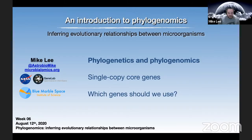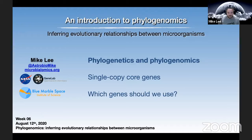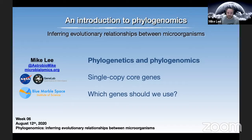Thank you very much for letting me be a part of this, Maren. We're going to start with talking about phylogenetics and phylogenomics, what they are, how we typically practice them, then we're going to discuss what single copy core genes are and why those are so useful as targets in phylogenomics, and then we'll move into which genes to actually use and why there isn't one best set.